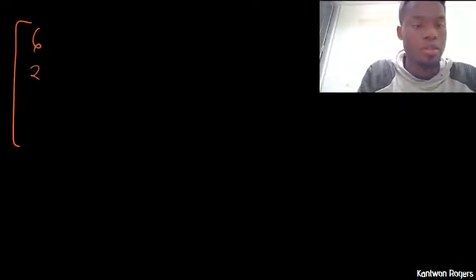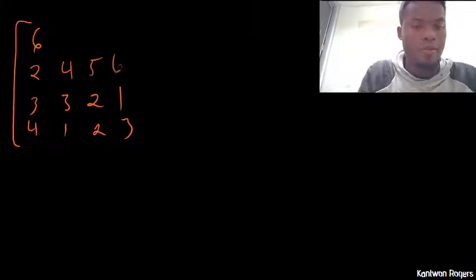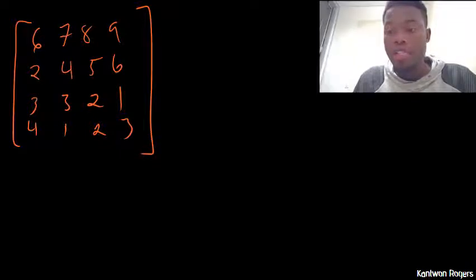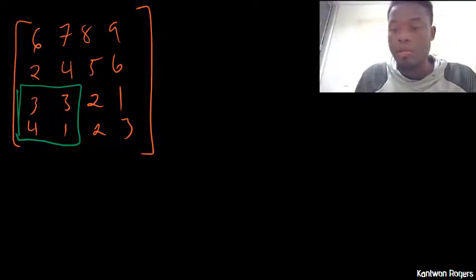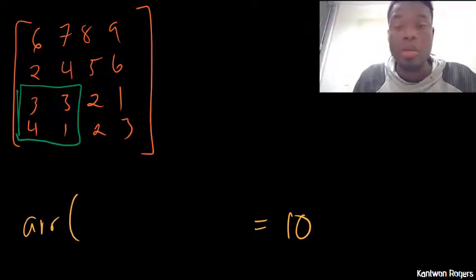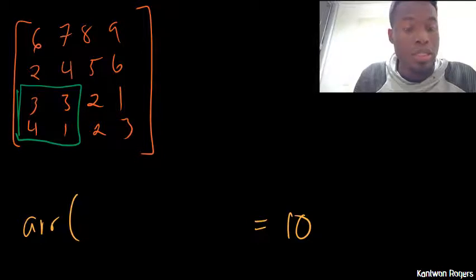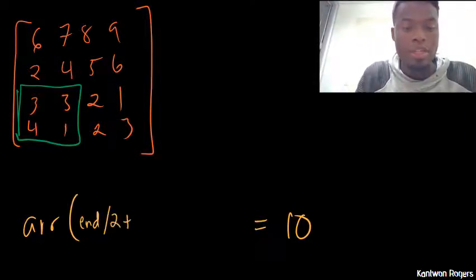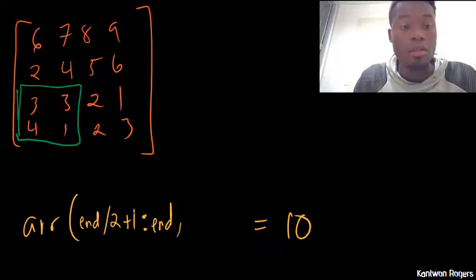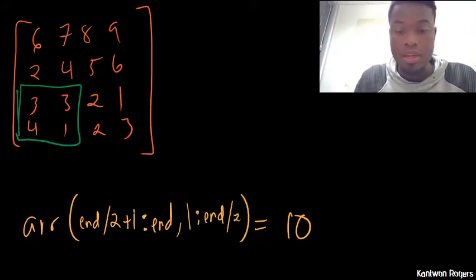Given any even-dimensioned array, let's do an example: I want to change the bottom left quadrant — those four numbers — into the value 10. I assign 10 to my array at the bottom left quadrant. For the second half of the rows, I start at end/2 + 1 and go to end. For the columns, I want the first half: start at 1 and go to end/2. That indexes the bottom left quadrant.